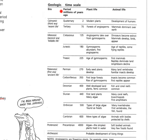What I'd like you to do is with a ruler draw in a line separating the era from the period. Draw in another line separating the plant life from the dates, and another line separating plant life from animal life. Pause and do that now.